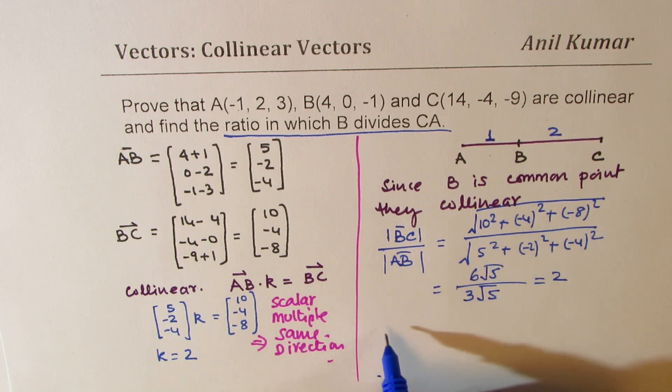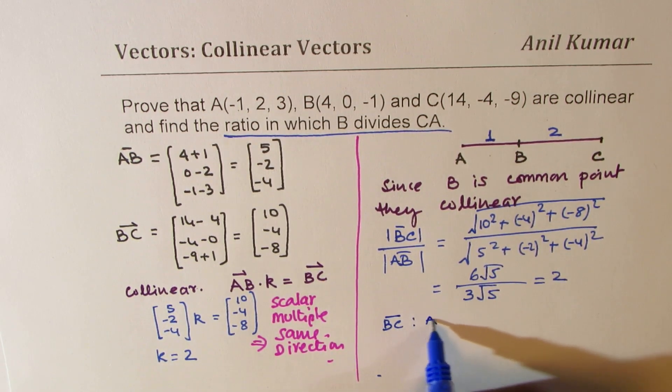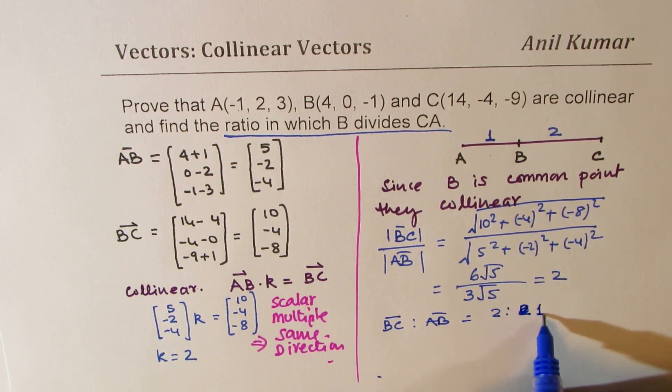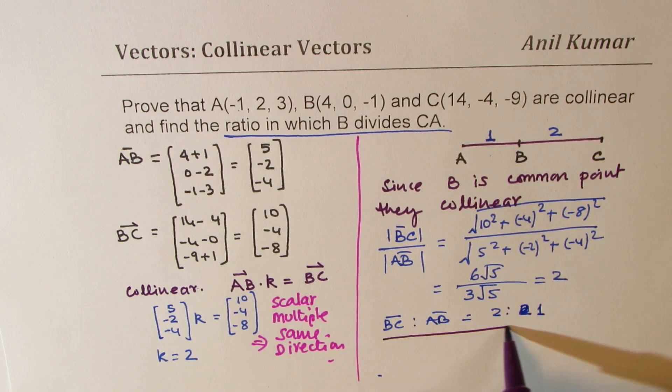So you can say that BC is to AB is equal to 2 is to 1. So that is how you can do part B of this question.